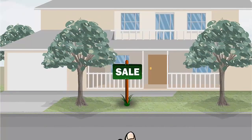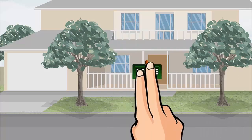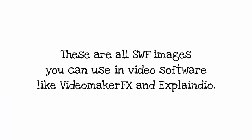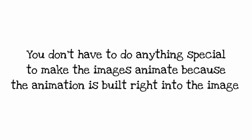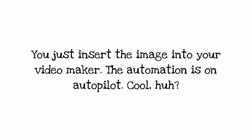I'm building a real estate scene in Explainedio. The basic Vidstickers package includes a set of animated signs that make the scene come alive. These are all SWF images — flash animation elements you can insert into video makers like Explainedio. You don't have to do anything special to make the images animate because the animation is built right in. You just insert the image into your video maker.